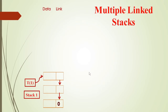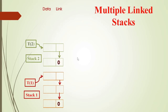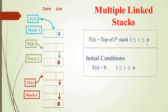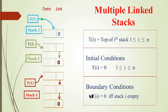Now we will look at more than one stack and how to represent them. You can have another stack, a third stack — any number of stacks can be represented. In this case, we have T of I, that is the top of the i-th stack, with T of 1, T of 2, and T of 3. I varies from 1 to N, representing N number of stacks. In the initial condition, T of I is equal to 0, meaning the stack is empty, and that will also be the boundary condition. So if T of I is equal to 0, the stack is empty.